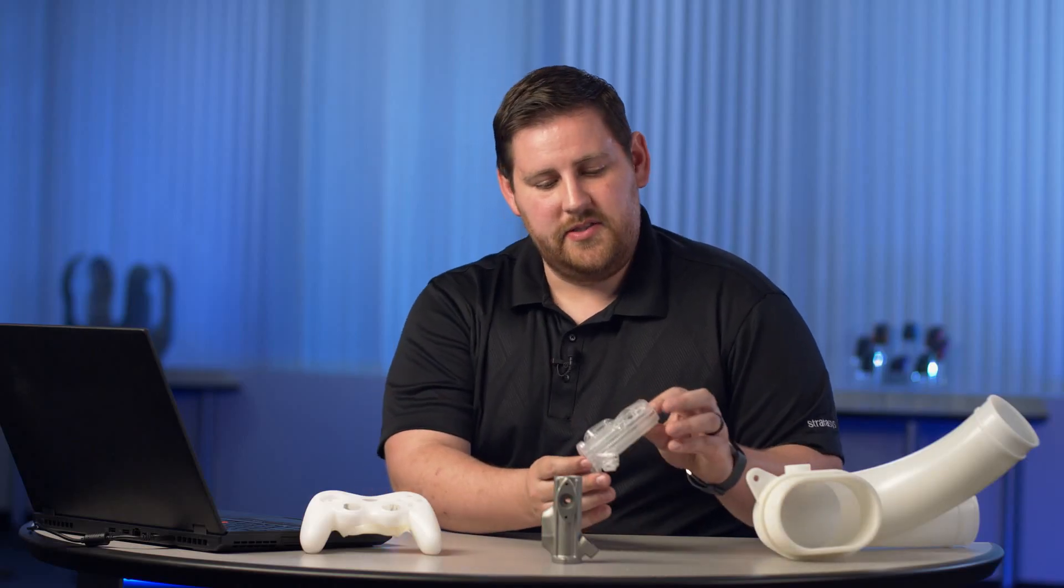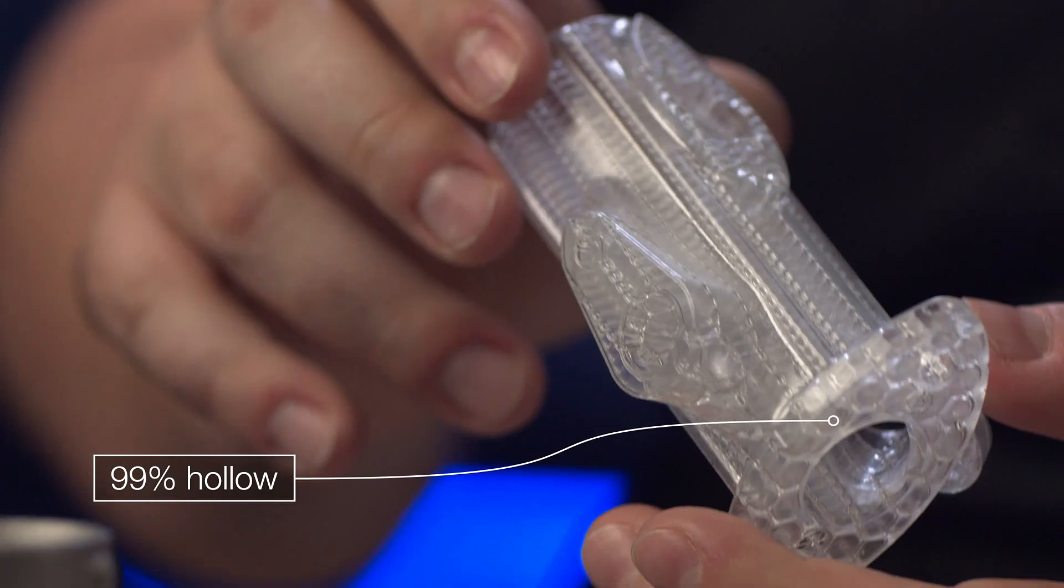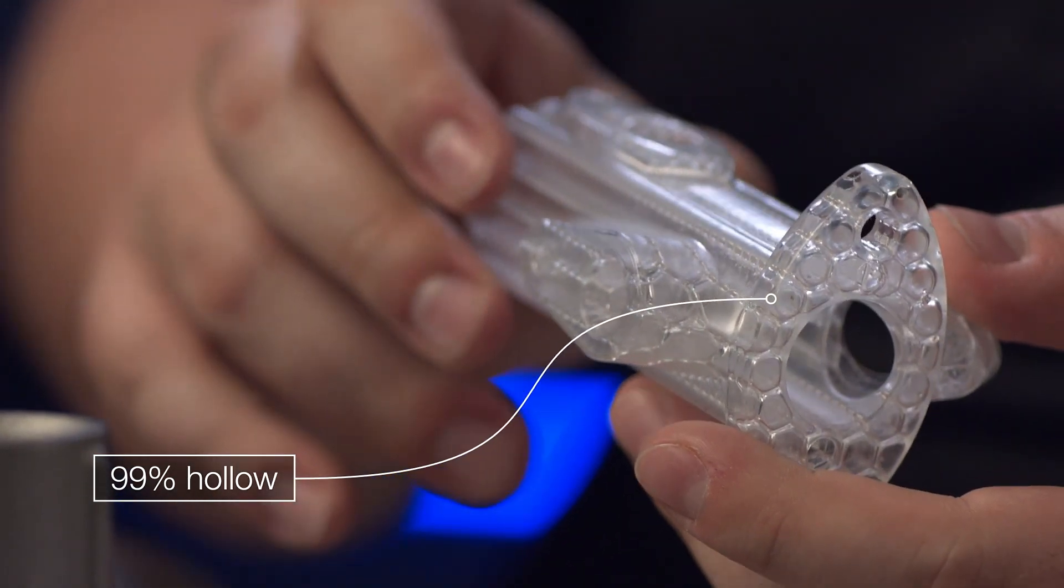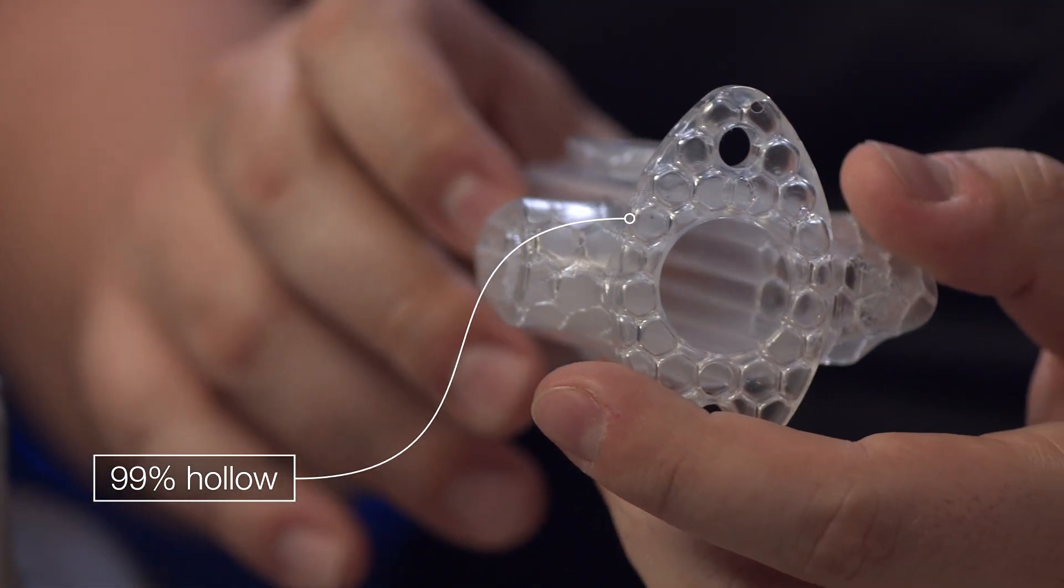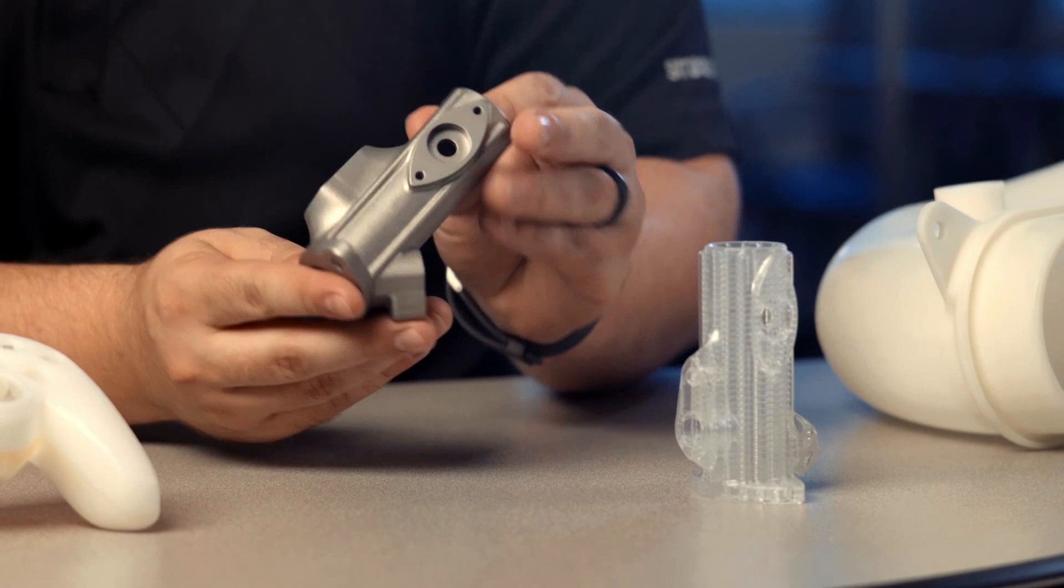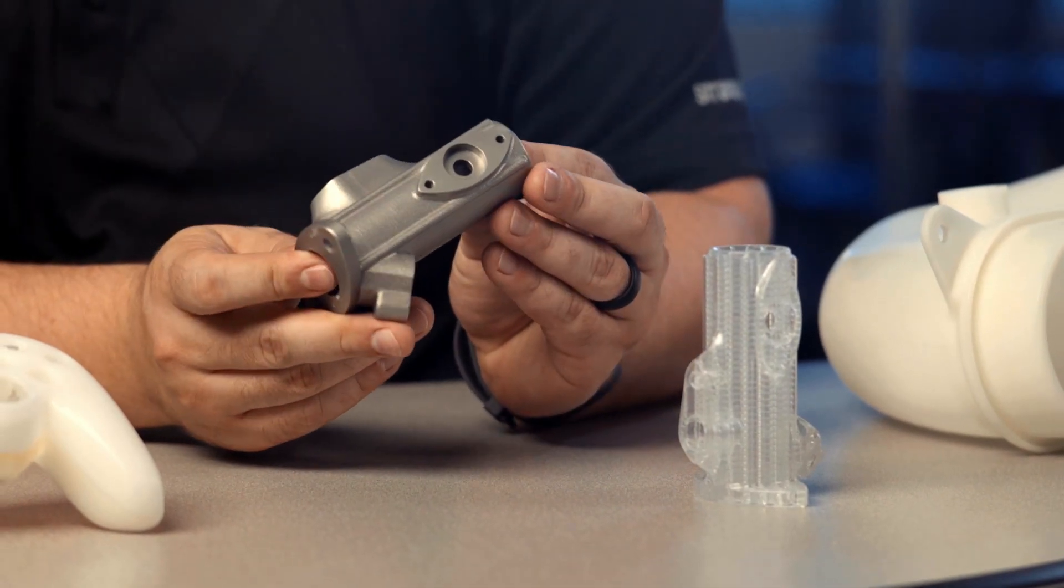So for instance right here, this is a throttle body we have that was printed in a hollow casting pattern style. So it is 99% hollow. And then we use this and encase it in ceramic. We burn out the master pattern in the ceramic and then we pour in the metal and we get the final metal part.